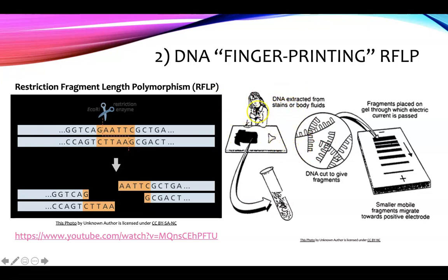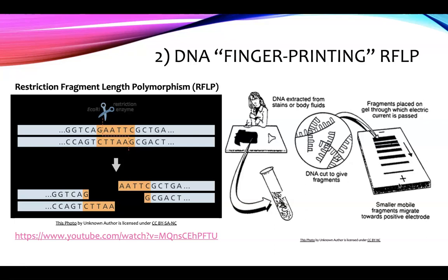DNA is going to be extracted from stains at the crime scene or body fluids. Then the DNA sample is put into a test tube and cut up to give fragments. Those fragments are placed on an electrophoresis gel, where there's a negative charge on one side and a positive charge on the other. DNA is negatively charged, so opposites attract — the smaller the fragment, the more quickly it's pulled through the gel.